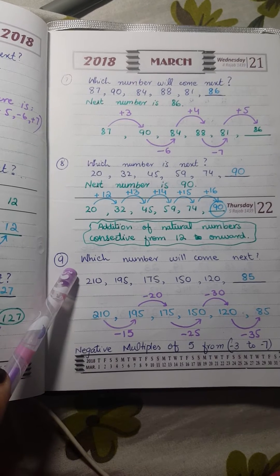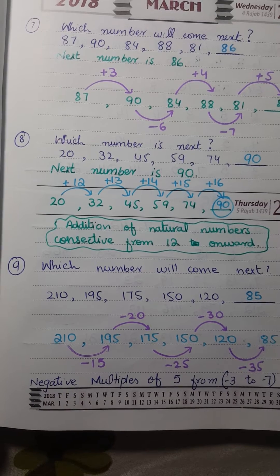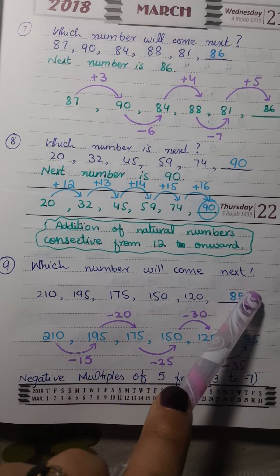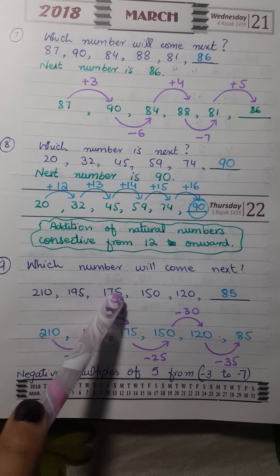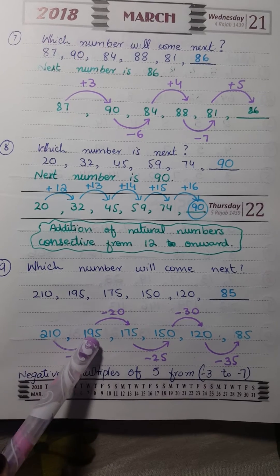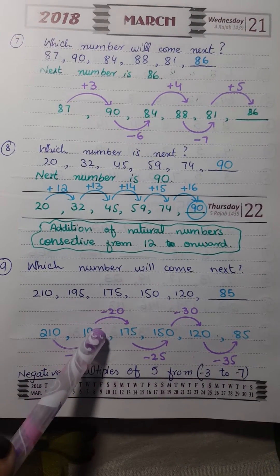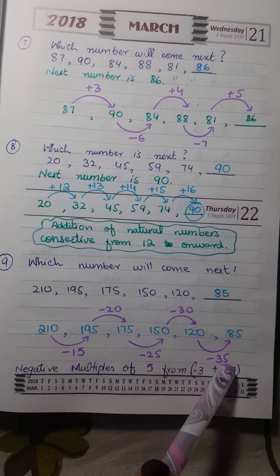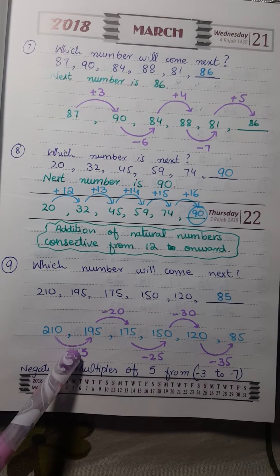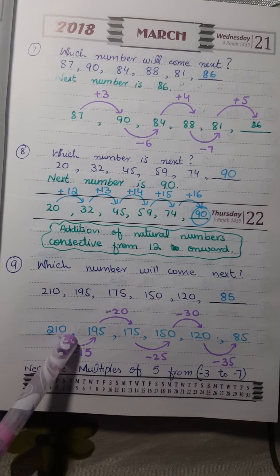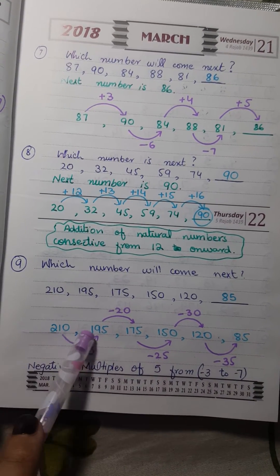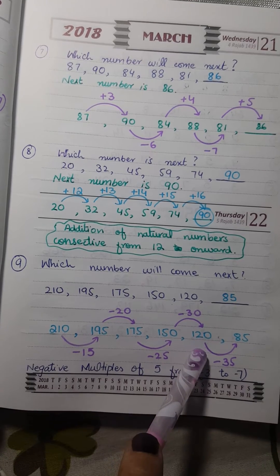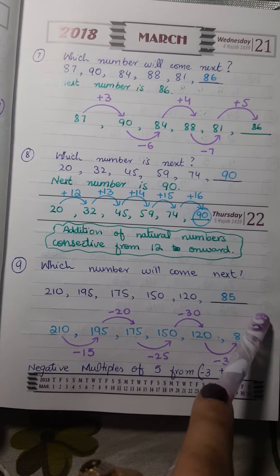Question nine: which number will come next in 210, 195, 175, 150, 120? The next number will be 85. We first see the differences: 210 − 195 = 15, 195 − 175 = 20, 175 − 150 = 25, 150 − 120 = 30. The differences are 15, 20, 25, 30 — multiples of 5, increasing by 5 each time. So the next difference will be 35, and 120 − 35 = 85. The numbers are decreasing by increasing multiples of 5.